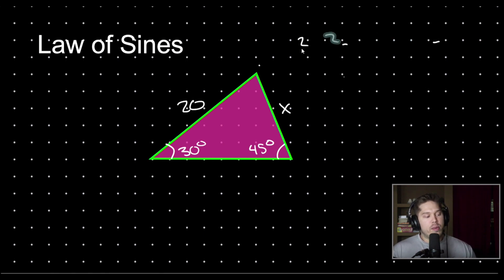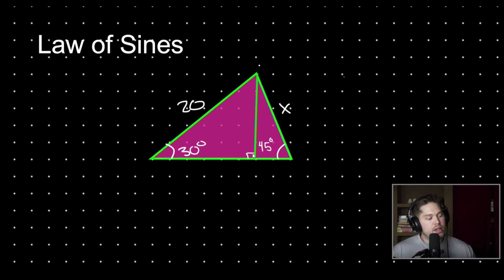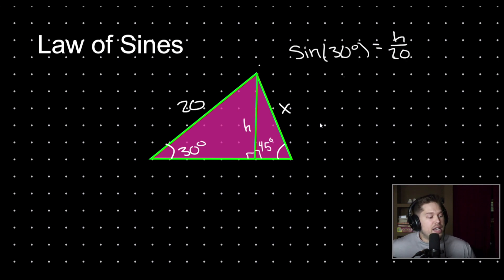And then you think, what's another way I could solve for the components of this triangle? And then you think: I can drop an altitude here and make this into two right triangles. We drop an altitude — this is still 45 degrees — and we have two right triangles. In what's called our altitude, let's call it h for height. And now we can get somewhere. We can solve for h using SOHCAHTOA. We know that the sine of 30 degrees is equal to h over 20. And so we could solve for h, and then we could solve for x this way.